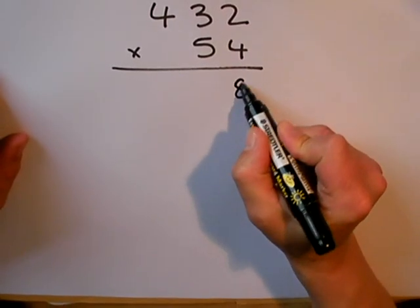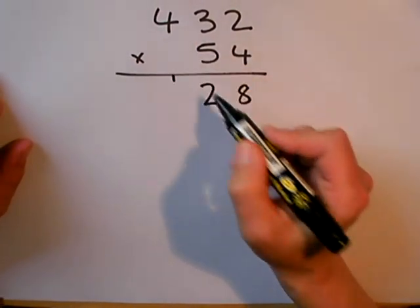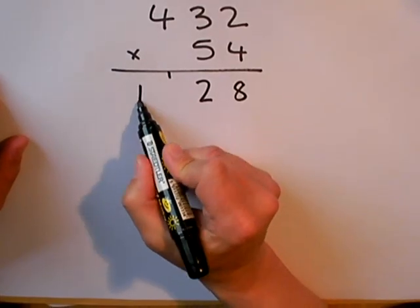4 twos are 8, 4 threes are 12, 1 to carry. 4 fours are 16, plus the 1, 17.